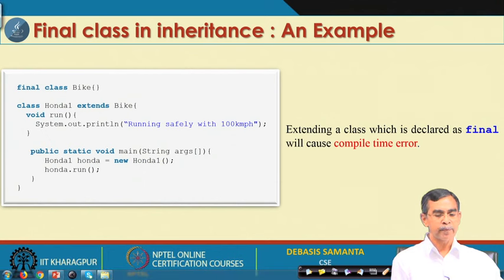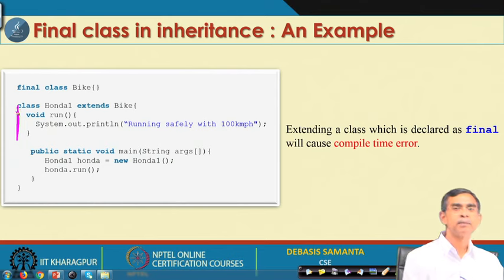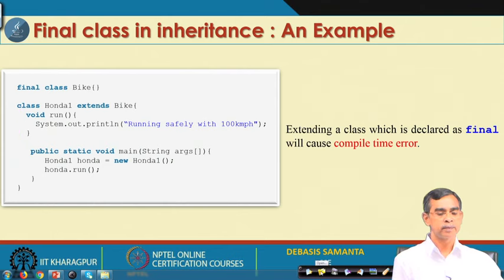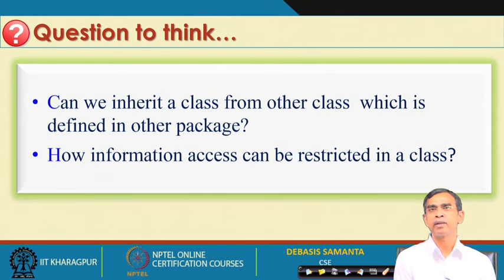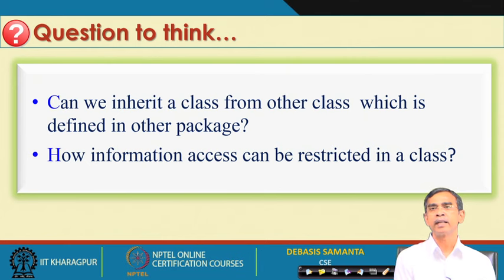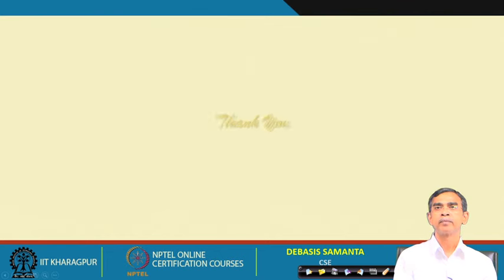The final keyword is strict: a final class cannot be used for inheritance, so no class can be derived from a final class. A variable declared final cannot be overridden in any derived class, and a method declared final cannot be overridden in any class. Final means no further implementation in any derived class is possible. For example, if class B is declared as final, extending it will give a compilation error. We have discussed the basic concepts related to inheritance of classes in Java. There are pending topics such as inheriting across packages, and information hiding, which will be covered in subsequent lectures.